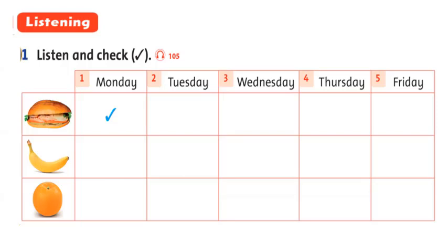Okay, let's listen. Listen and check. 1. It's Monday. Today I have a sandwich. 2. It's Tuesday. I don't have a sandwich, but I have an orange and a banana. 3. Today is Wednesday. I have a sandwich and a banana, but I don't have an orange. 4. Today is Thursday, and I'm hungry. I have a sandwich, a banana, and an orange. 5. It's Friday today. I don't have a banana, but I have a sandwich and an orange.